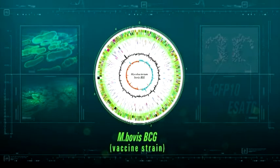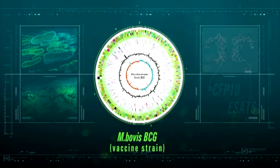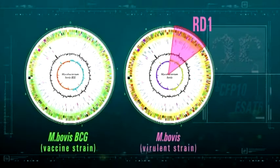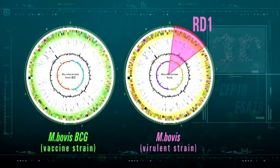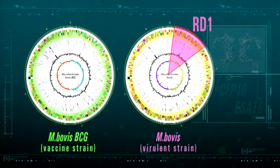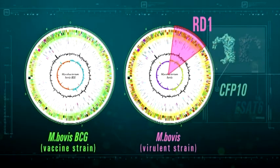In contrast to virulent strains of tuberculosis mycobacterium, the vaccine strain mycobacterium bovis BCG does not contain a fragment of genome RD1, which encodes secretion of protein CFP10 and ESAT6, mediating the main virulent properties of the infectious agent.